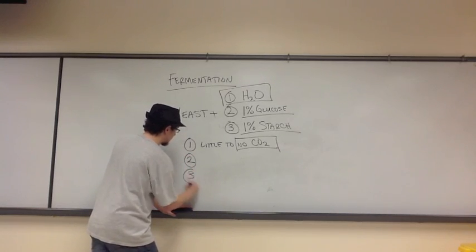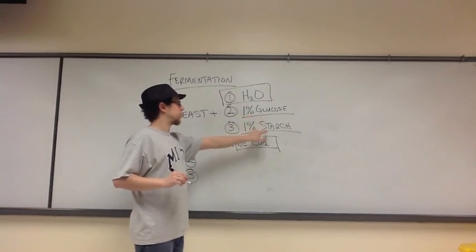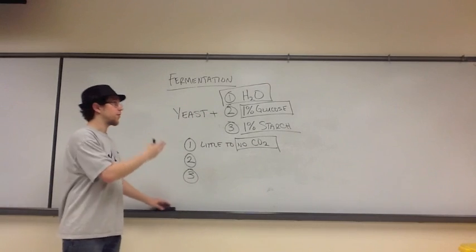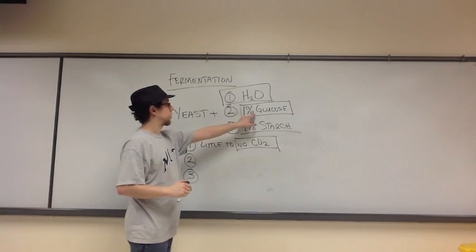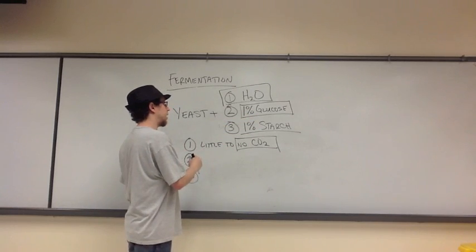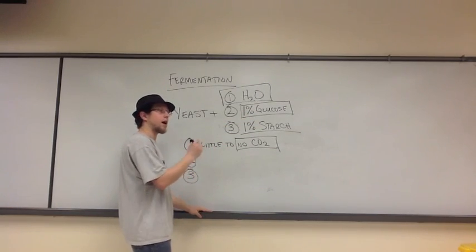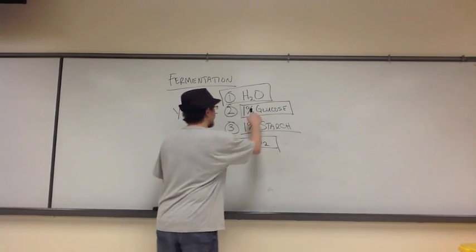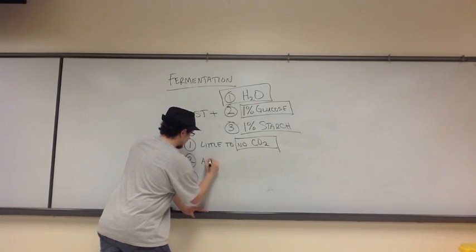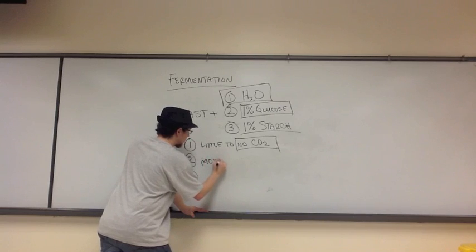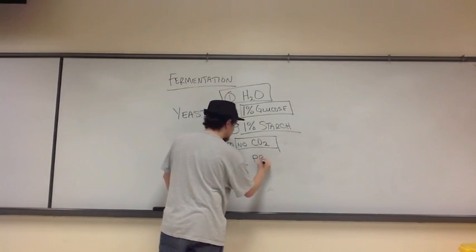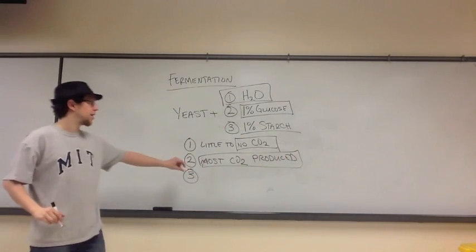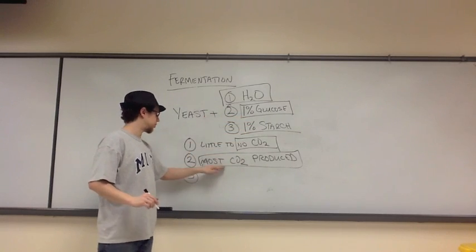Which leaves us with the other two solutions, our monosaccharide glucose and our polysaccharide starch. The monosaccharide is the preferred substance because it's already in a state where the yeast can readily hydrolyze it and produce pyruvate through glycolysis. So one percent glucose should produce the most carbon dioxide. That's what you should have seen in your lab, that this tube of the yeast glucose mixture should have had the most carbon dioxide produced.